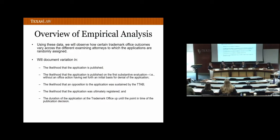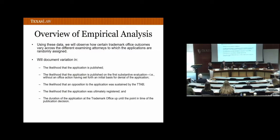Explaining the methods is straightforward. We're taking the data and looking at these various trademark office outcomes, seeing how they vary across trademark examining attorneys. We look at the rates by which applications are published, the rates by which they're published on the very first decision, the rates by which they're registered, the degree to which applications are ultimately subject to a sustained opposition at TTAB, and a measure of processing time — the duration from the application coming in until the publication decision. The goal is to see how much heterogeneity in these outcomes we see across trademark examining attorneys.